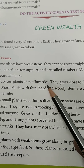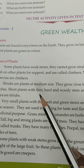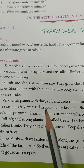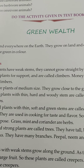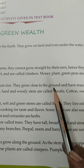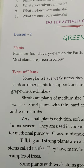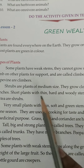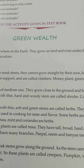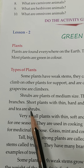Shrubs are plants of medium size. They grow close to the ground and have many branches. Short plants with thin, hard, and woody stems are called shrubs. For example, cotton, rose, and tulsi are shrubs.